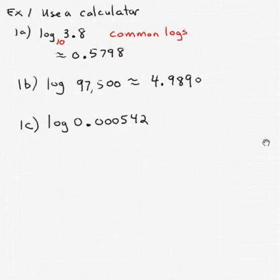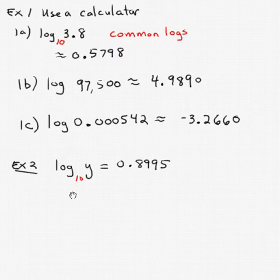If it's an exceptionally small number, we used to have to convert that to scientific notation, but not anymore with our calculators. So whether you type the number first or the LOG first, it's 0.00542, and we're going to take the LOG base 10 of that. And that's approximately negative 3.2660.